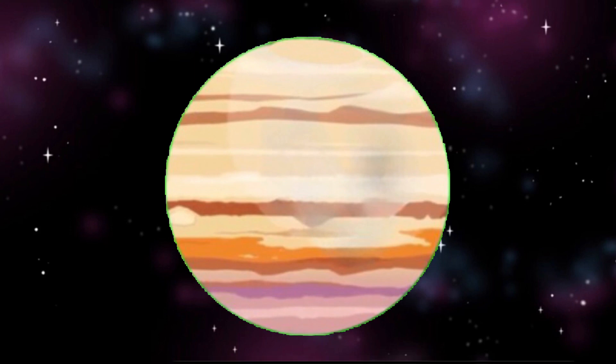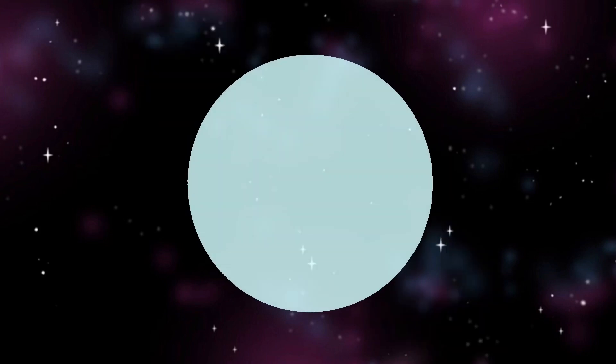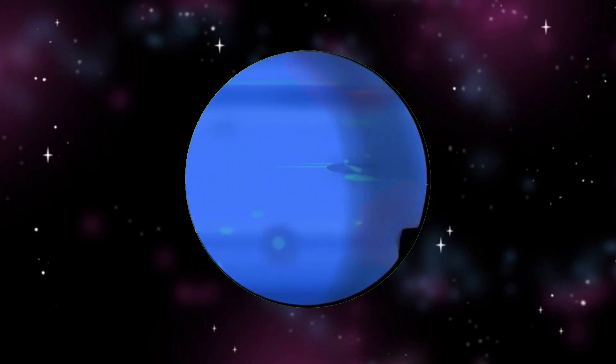Planet Jupiter has auroras only visible on its night side. Saturn's auroras are only seen with ultraviolet light. Uranus has auroras that appear to be white. Neptune's auroras appear as a faint red to human sight.